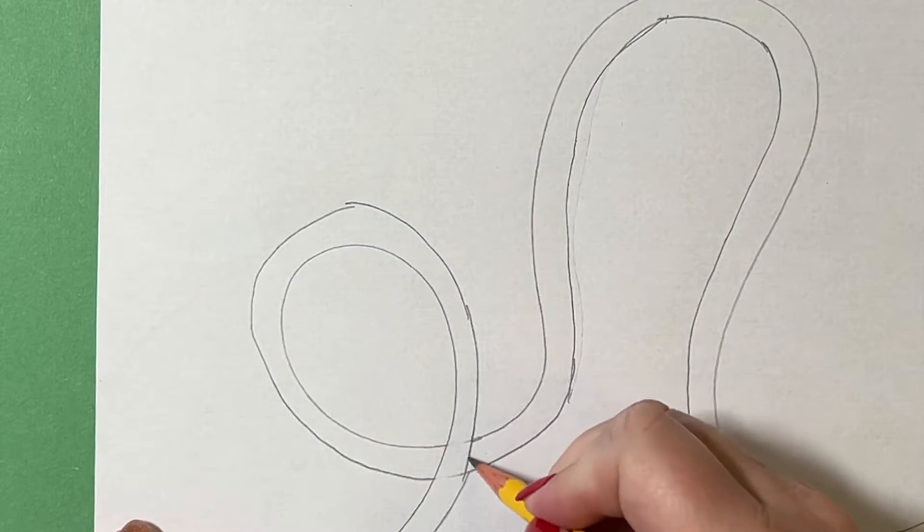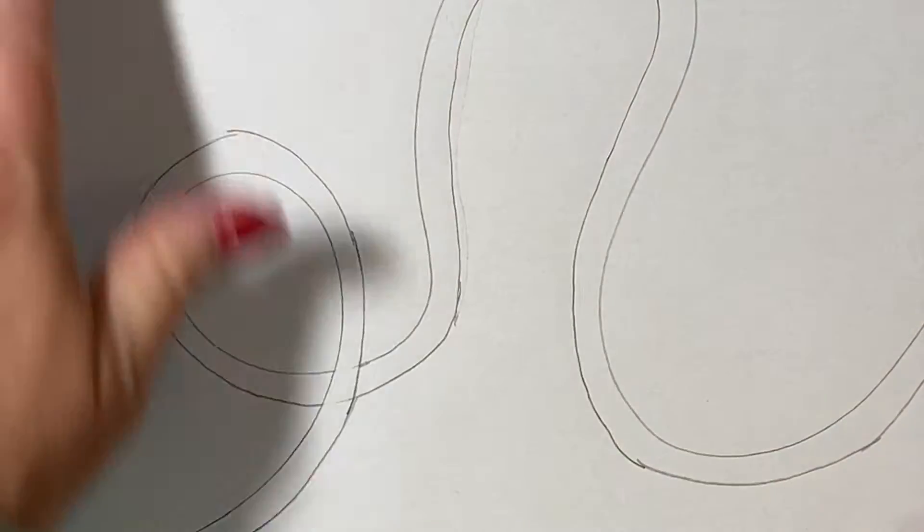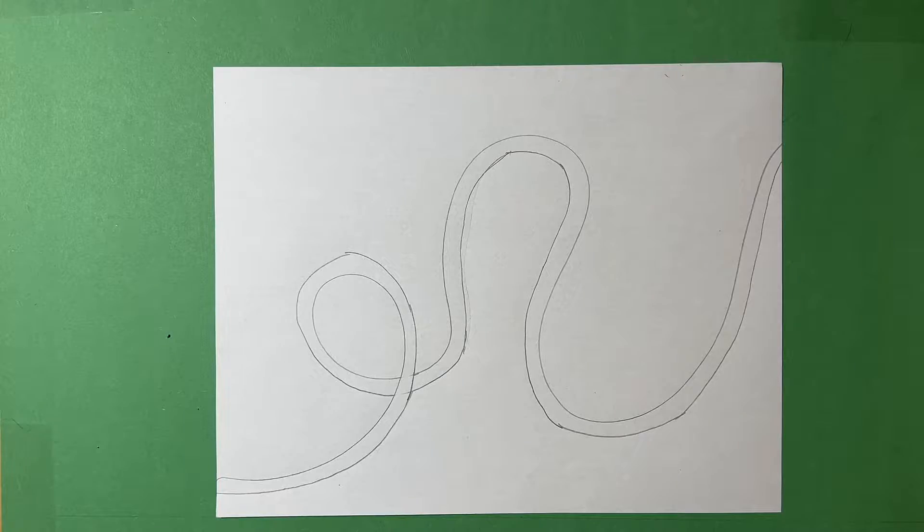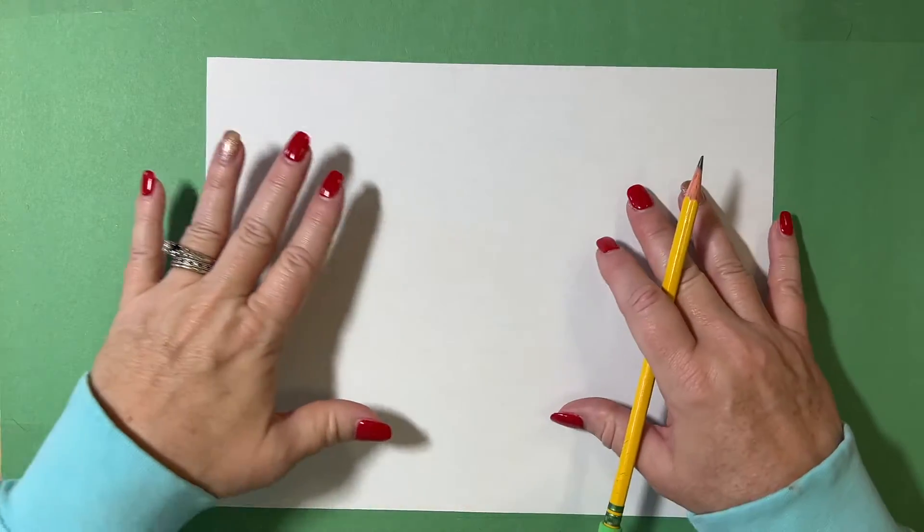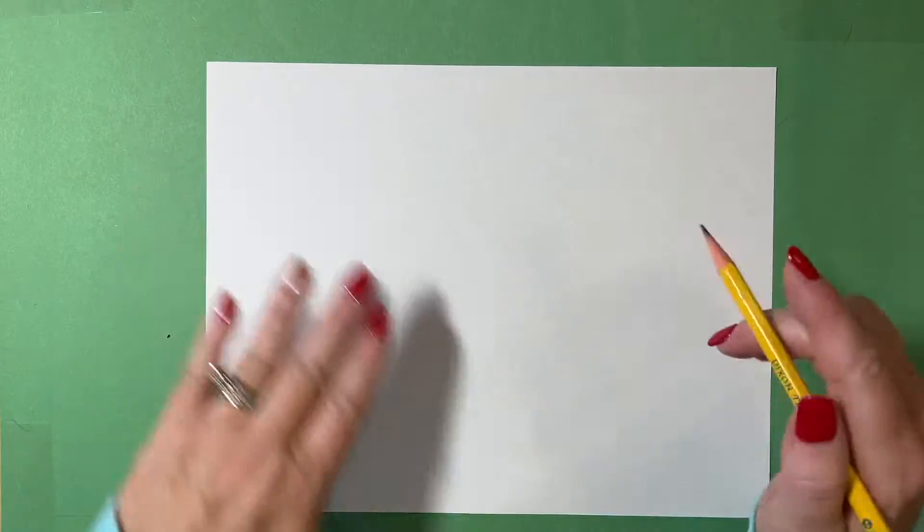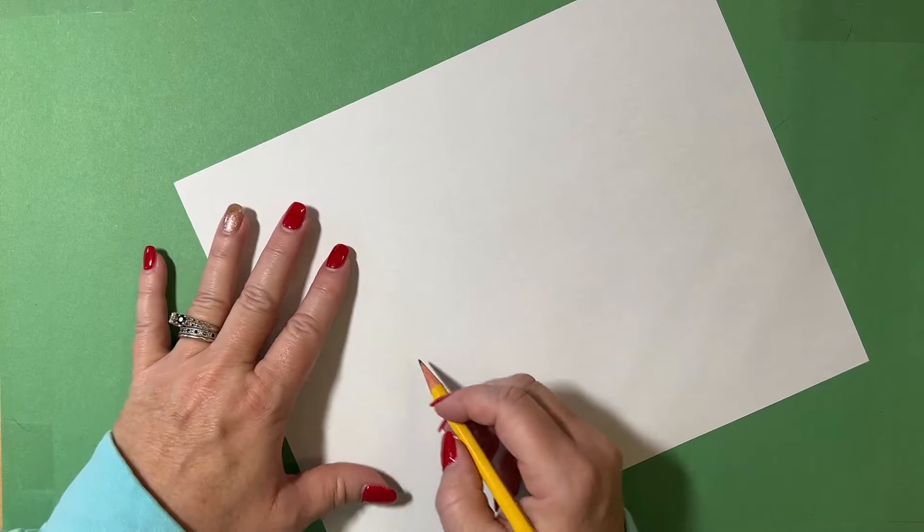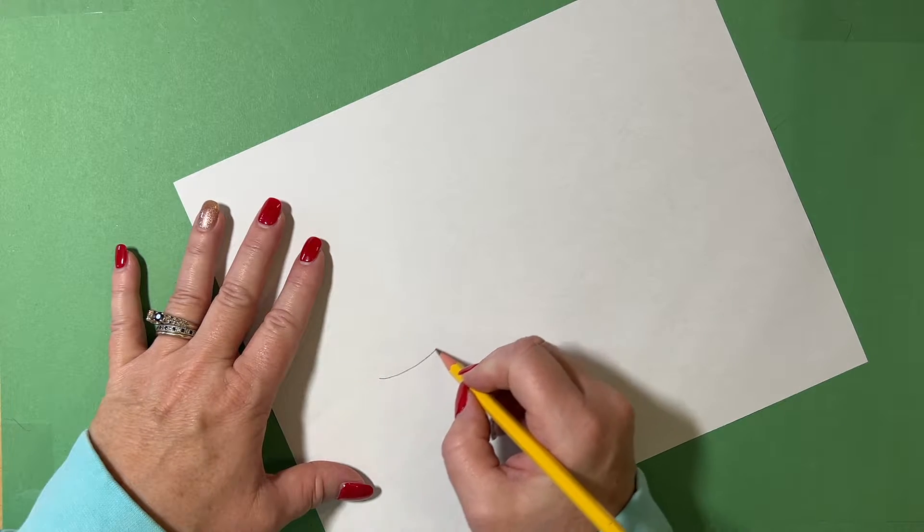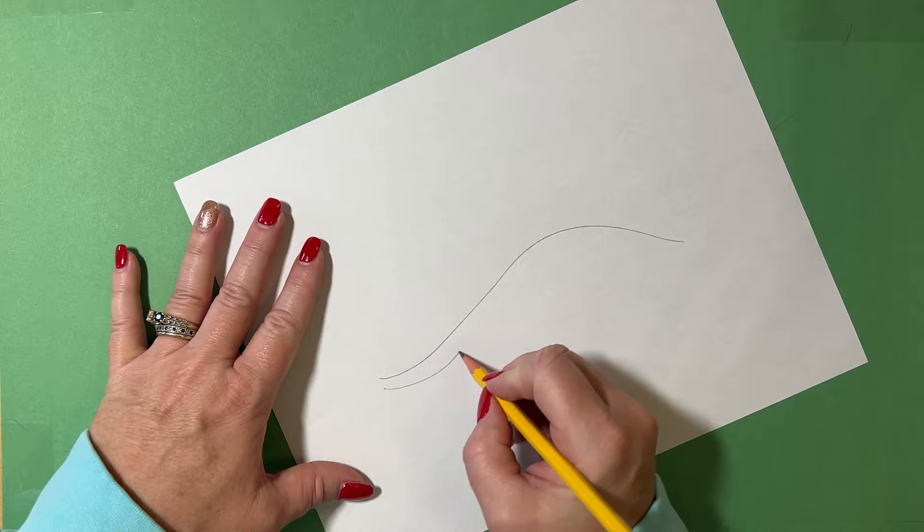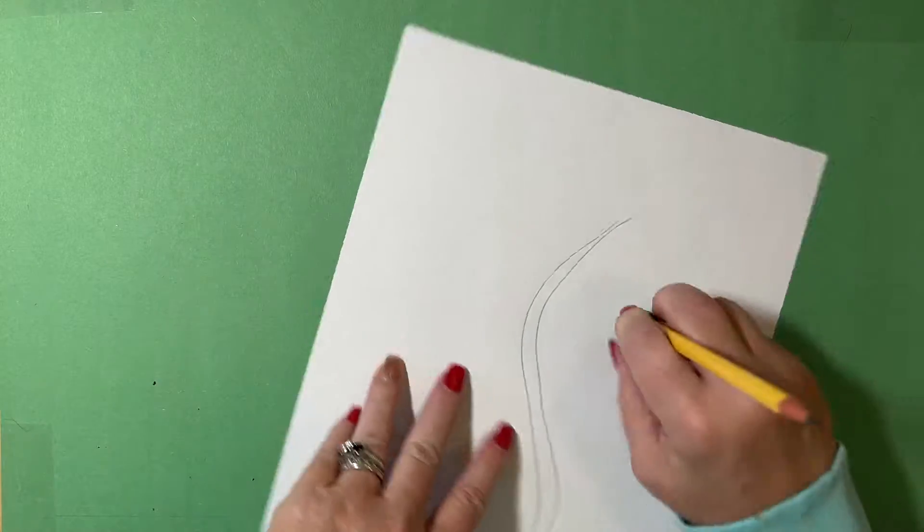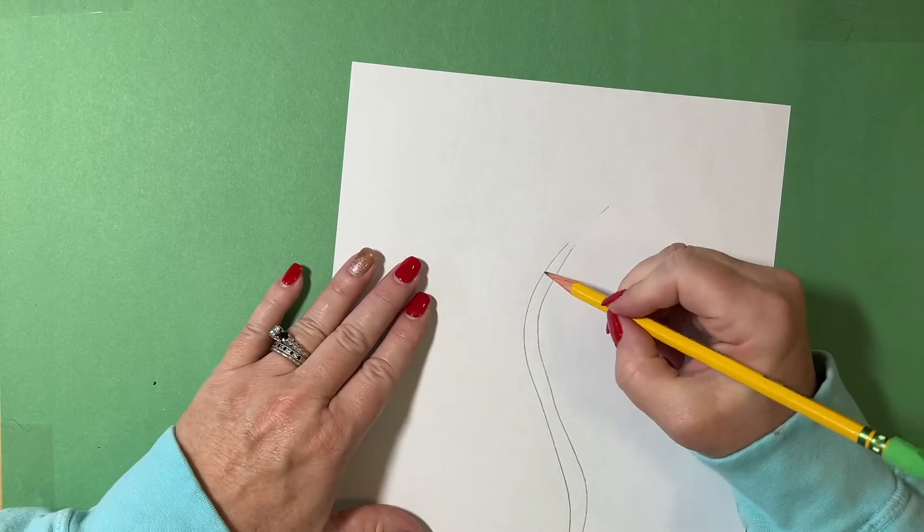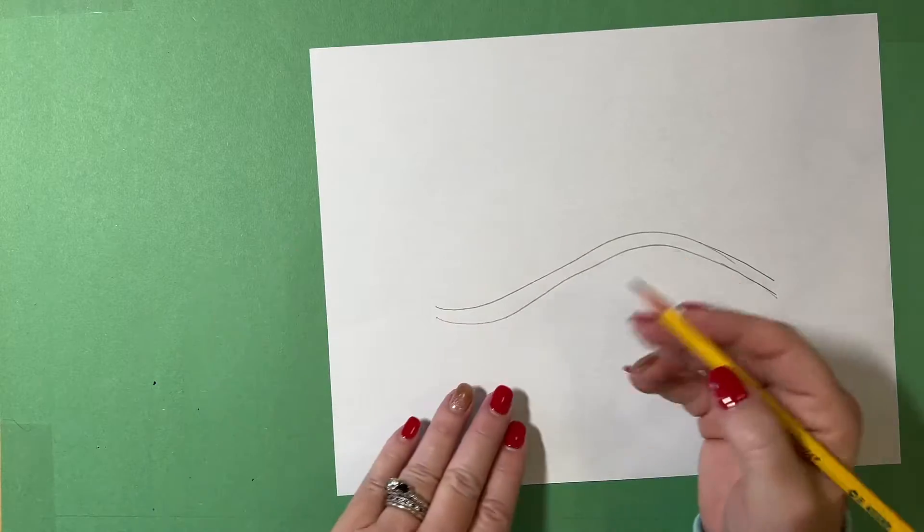So now I'm ready to move on to my bulbs. So let's talk about bulbs for a minute. I'm going to put this paper to the side and get this other paper out right here. When you're drawing bulbs on a strand, so for example, here's my strand right here. Let me fix that. There we go. There's my strand.